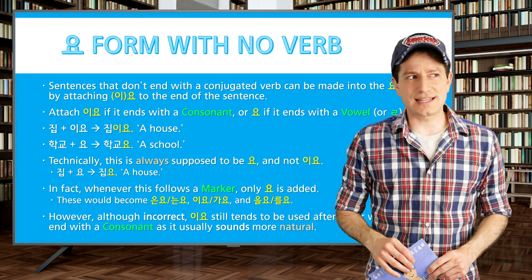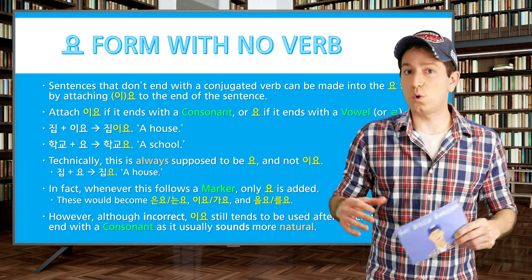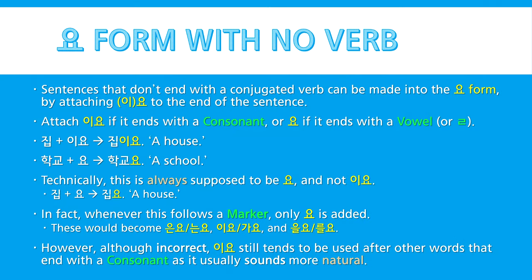But what if you're working with a sentence that doesn't end with a verb? That's where 이요 or 요 come in handy. You'll attach 이요 to the end of a sentence if it ends with a consonant, or 요 if it ends with a vowel or the letter ㅇ. For example, 집 becomes 집이요, and 학교 becomes 학교요. Technically, this is always supposed to be 요 and not 이요, so 'house' should be 집요. Whenever 요 follows a marker, only 요 is added: 은요, 는요, 이요가요, 을요, 를요. However, although technically incorrect, 이요 still tends to get used after words ending with a consonant, as it usually sounds more natural.